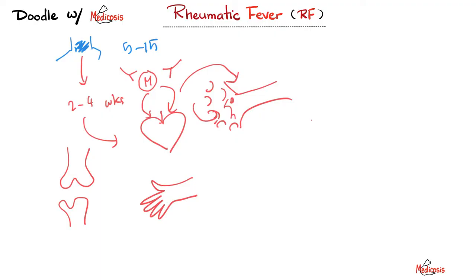I also started attacking my own joints and my own skin, and I get the Jones criteria. J is for joint disease — usually polyarthritis. It's migratory: first it hits the knee, then the hip, then it leaves and goes to the elbow, then the shoulder, etc. Many joints — polyarthritis. And after it goes away, it does not leave permanent deformity or permanent damage behind.